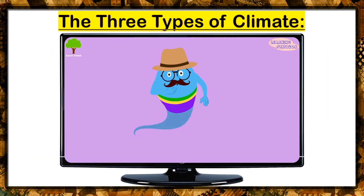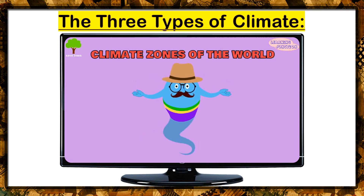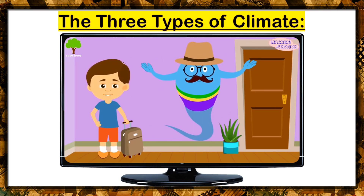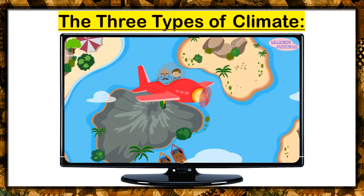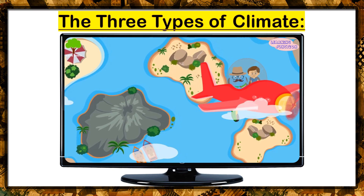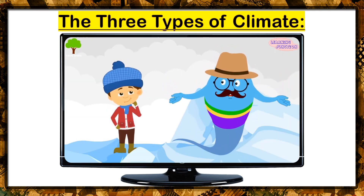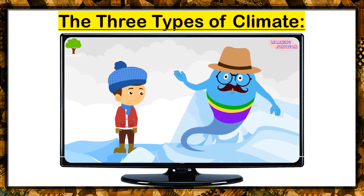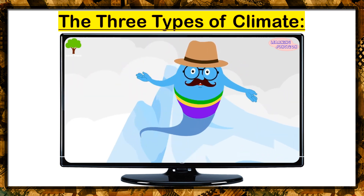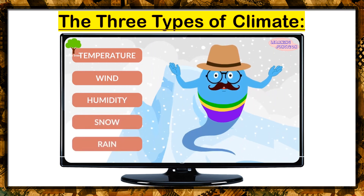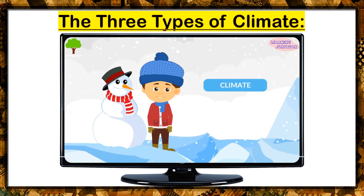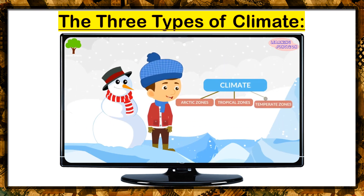Today we'll learn about the climate zones of the world. Climate is the usual condition of temperature, wind, humidity, snow, and rain in an area of the Earth's surface for a long time. Climate is divided into three main groups: Arctic zones, tropical zones, and the temperate zones.